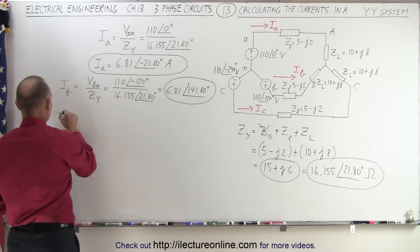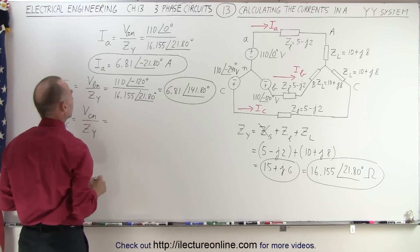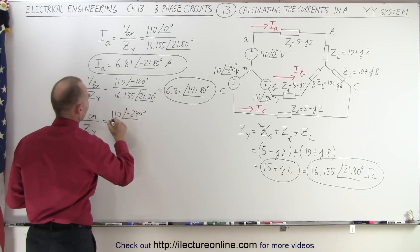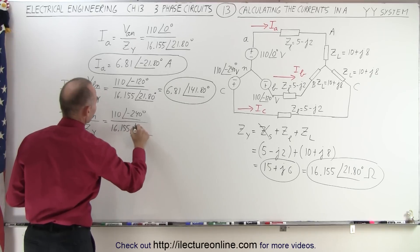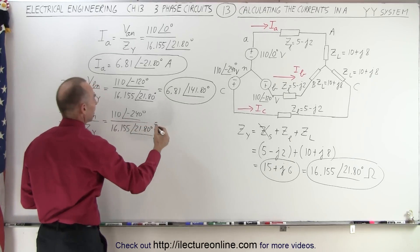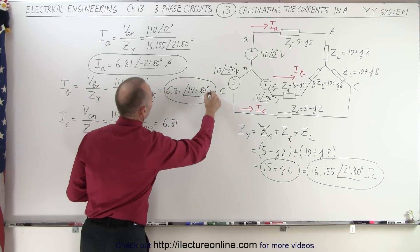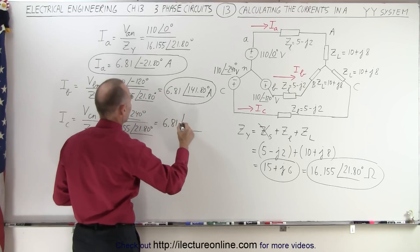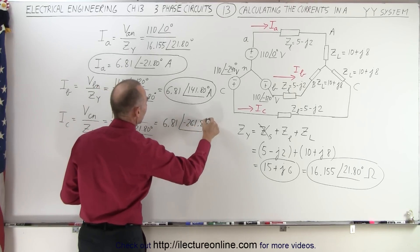And now for current I sub C, which is equal to Vcn divided by the impedance of the Y combination, which is equal to 110 at a phase angle of minus 240 degrees, divided by 16.155, with a phase angle of 21.80 degrees. And you can see the pattern. It will be 6.81 with a phase angle of minus 261.80 degrees.